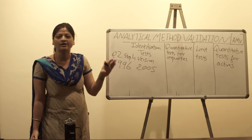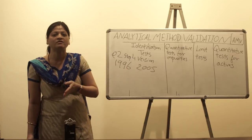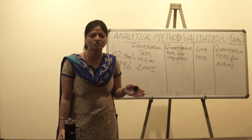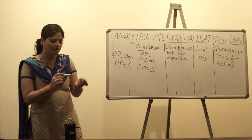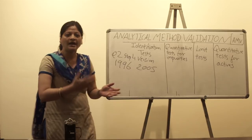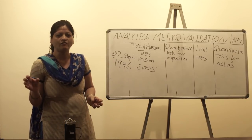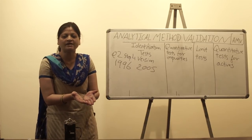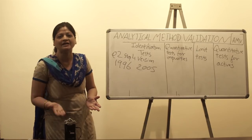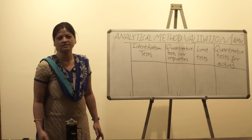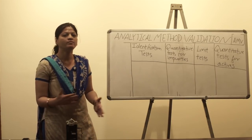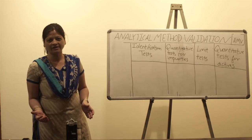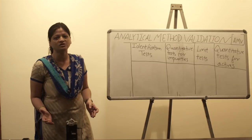We will now study the content of Q2 guidelines on analytical method validation, specifically the first part which deals with the text — covering what are the different aspects of the guidelines. As per ICH recommendations, in order to perform analytical method validation, you have to evaluate eight to nine different performance characteristics, also called parameters of analytical method validation. We will see each one of these parameters and the terminologies associated with them.